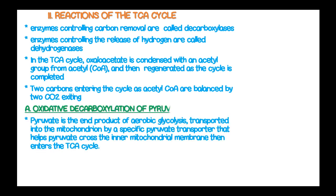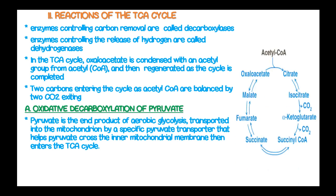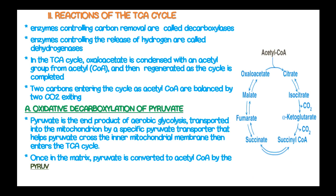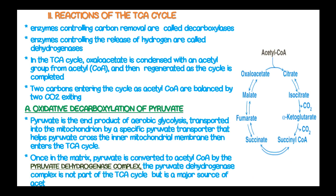We start with the first reaction known as oxidative decarboxylation of pyruvate. Pyruvate is the end product of aerobic glycolysis, transported into the mitochondrion by a specific pyruvate transporter that helps pyruvate cross the inner mitochondrial membrane, then enters the TCA cycle. Once in the matrix, pyruvate is converted to acetyl-coenzyme A by the enzyme known as pyruvate dehydrogenase complex. This pyruvate dehydrogenase complex is not part of the TCA cycle but is a major source of acetyl-coenzyme A.